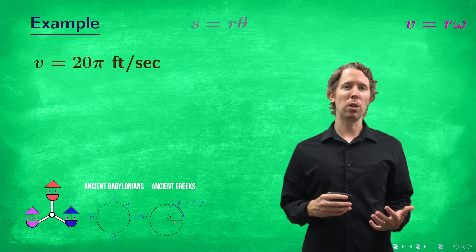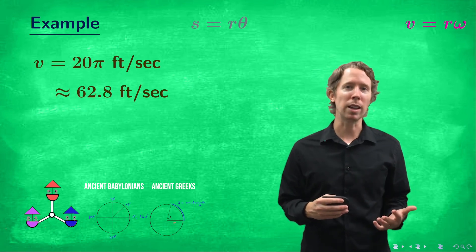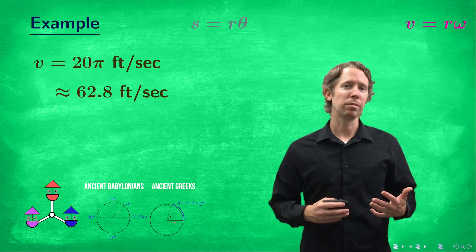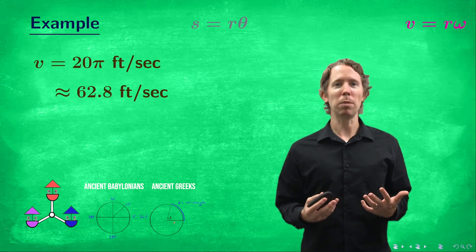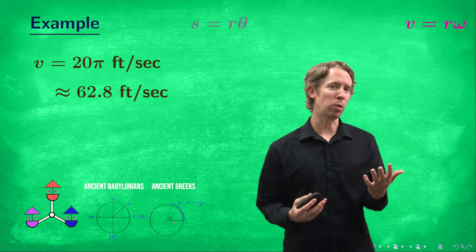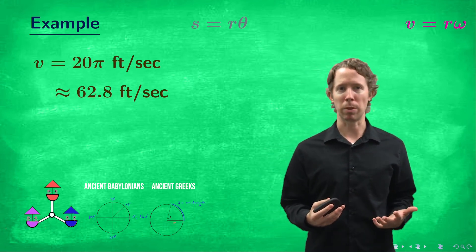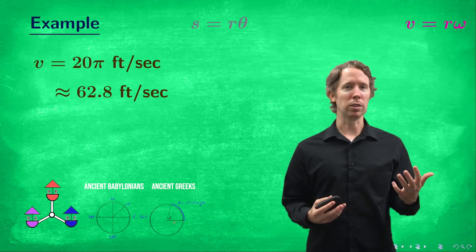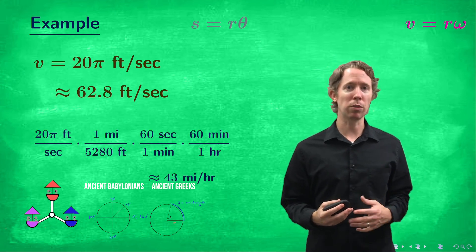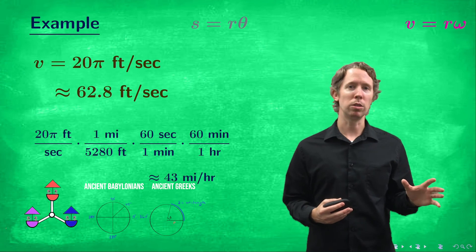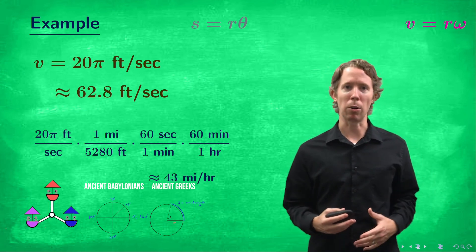Pi is about 3.14. So this is about 62.8. And we probably would have a better idea of what this really means if we convert it into miles per hour. So a straightforward conversion can do that for us. And if you work through it, you'll see that this comes out to about 43 miles per hour.